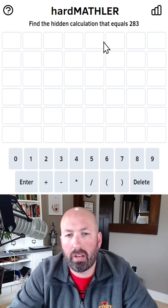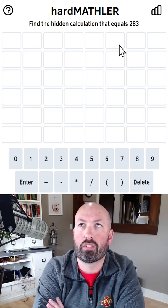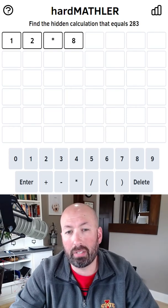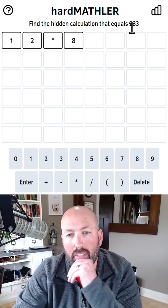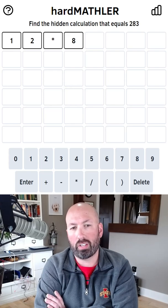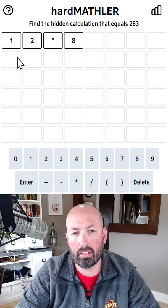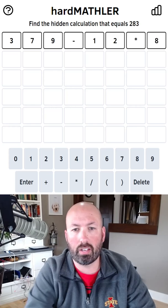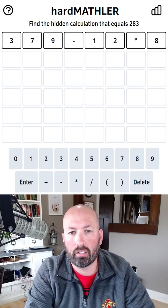So let's think about a two-digit times a single-digit that would give us something good to subtract, so maybe something like 12 times 8, which would be 96. So let's see, what's 283 plus 96? That's gonna be 379, so we could do 379. Yeah, that's pretty good. 379 minus 12 times 8 gives us six unique digits. Let's try that.